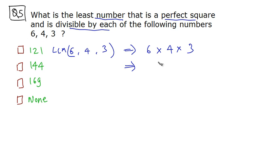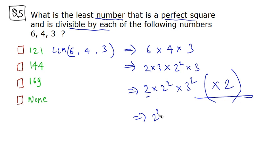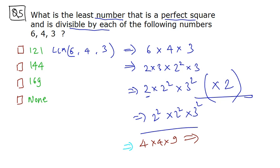We break things down into prime factors: 6 = 2 × 3, 4 = 2 squared, and 3 stays as is. Combining them gives 2 × 2² × 3² = 2³ × 3². This is not a perfect square, so we multiply by 2 to get 2² × 2² × 3², which is a perfect square. Solving: 4 × 4 × 9 = 144. So the answer is 144.